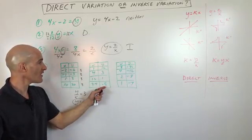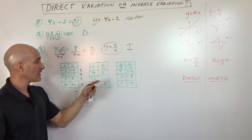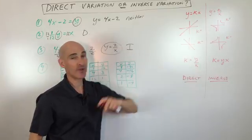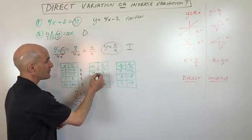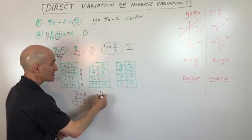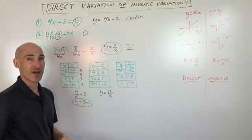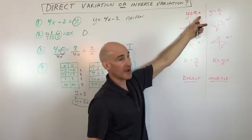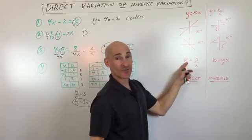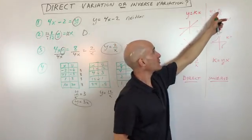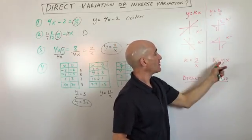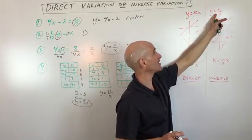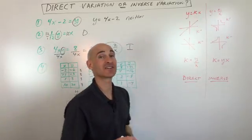Let's do two more examples. For this table, divide y by x: 12 divided by 1 is 12, but 3 divided by 4 is 0.75 — they're not the same, so it's not direct. Try multiplying: 1 times 12 is 12, 4 times 3 is 12, 12 times 1 is 12 — we get 12 each time, so this is inverse variation: y equals 12 divided by x. Note: for direct variation y equals kx, solving for k means dividing — k equals y over x. For inverse variation y equals k over x, solving for k means multiplying — k equals y times x. It's the opposite operation.